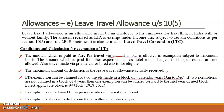In case an employee has not taken two exemptions in the block, he is allowed to carry forward one exemption to the first year of the next block. For example, the current applicable block is 2018 to 2021 — that is the entire calendar years of 2018, 2019, 2020, and 2021. If the employee has not taken any exemption for travel in that block, he can carry forward one exemption to the next year, which is 2022.